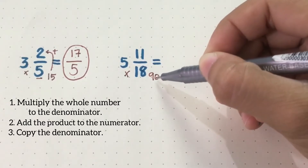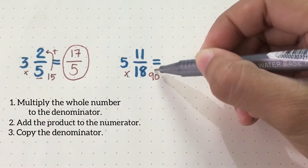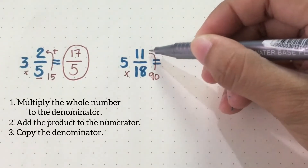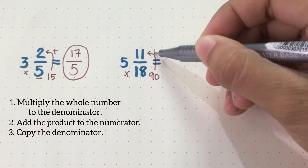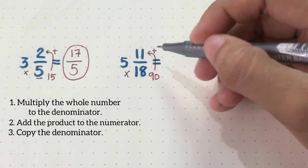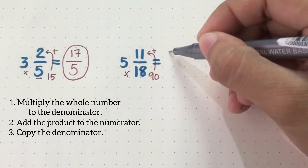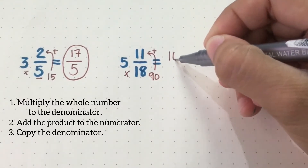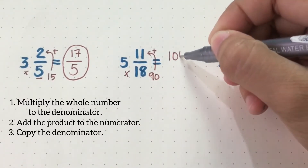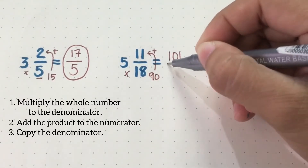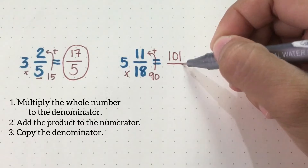After that, add 90 to the numerator. The numerator is 11, so 90 plus 11, you'll get 101. That will be our numerator.